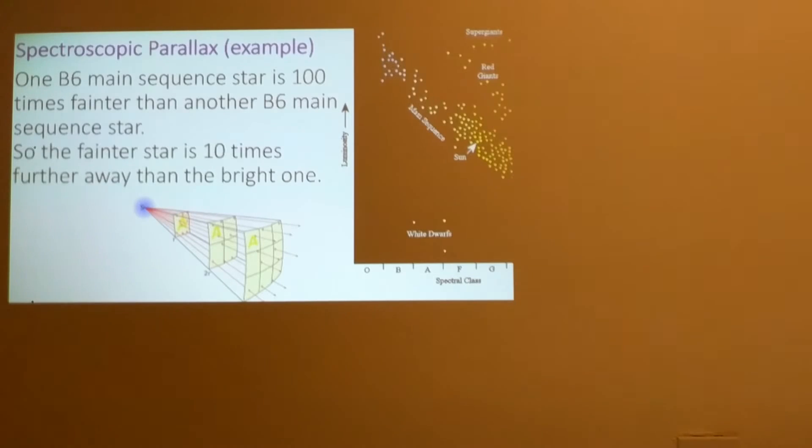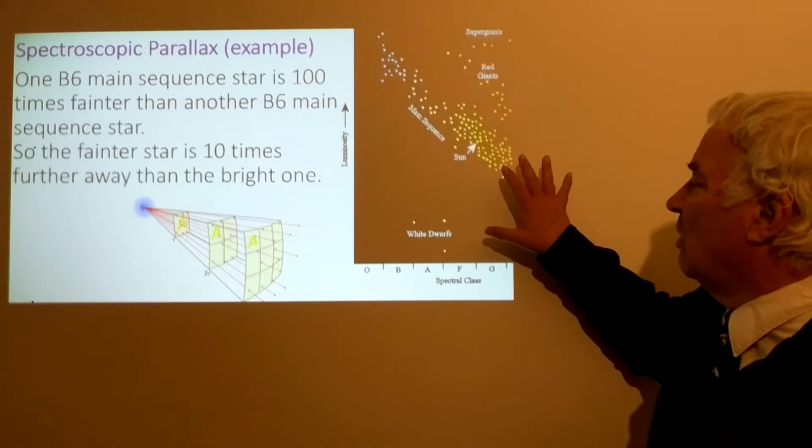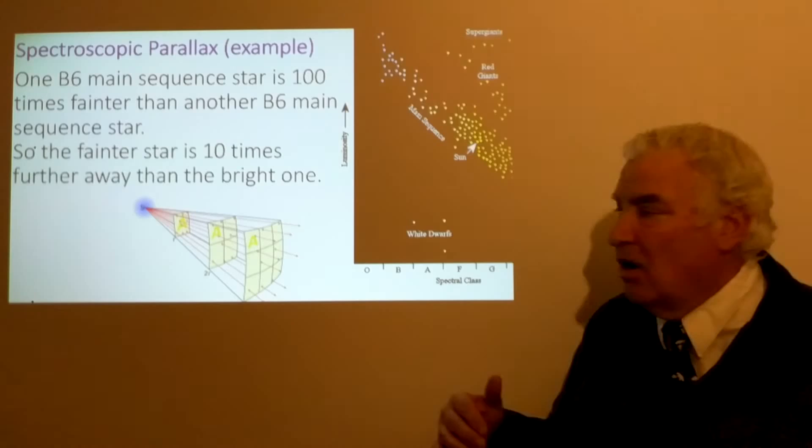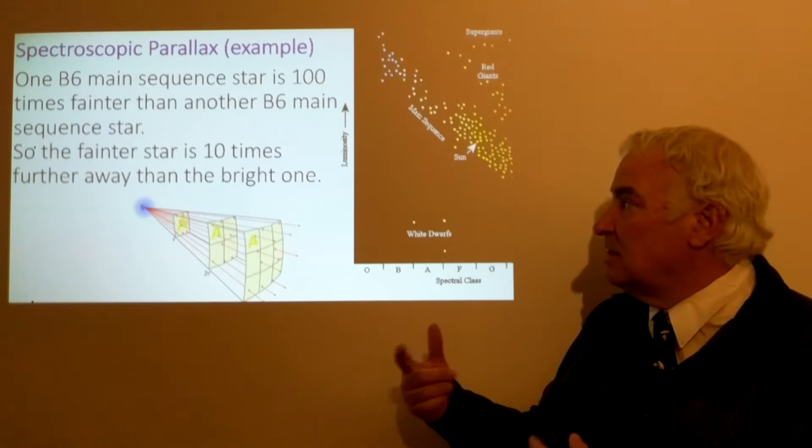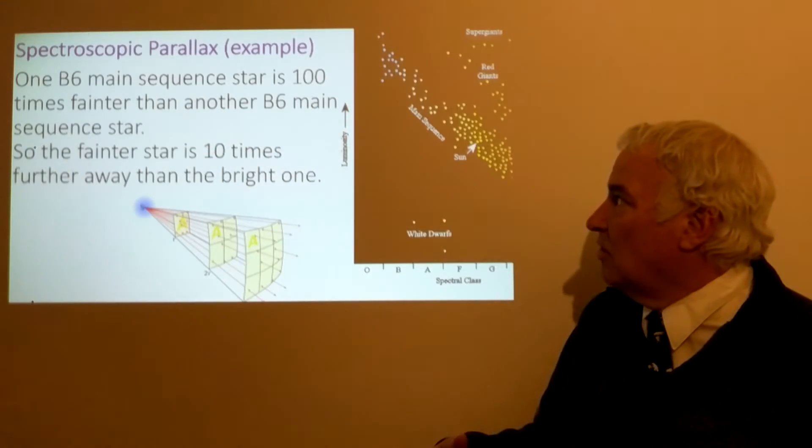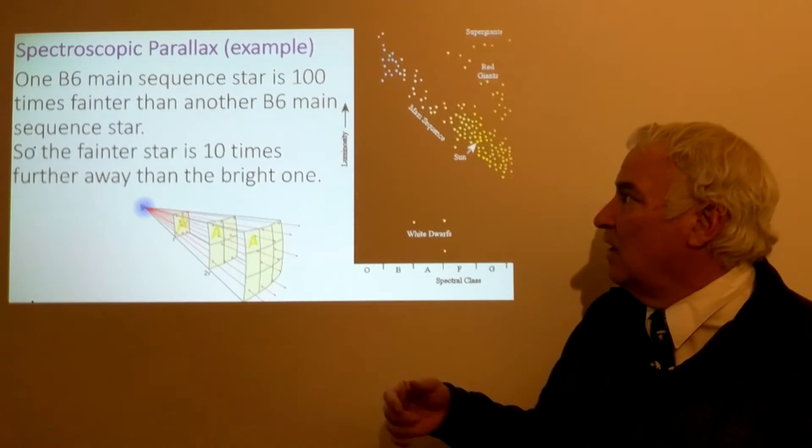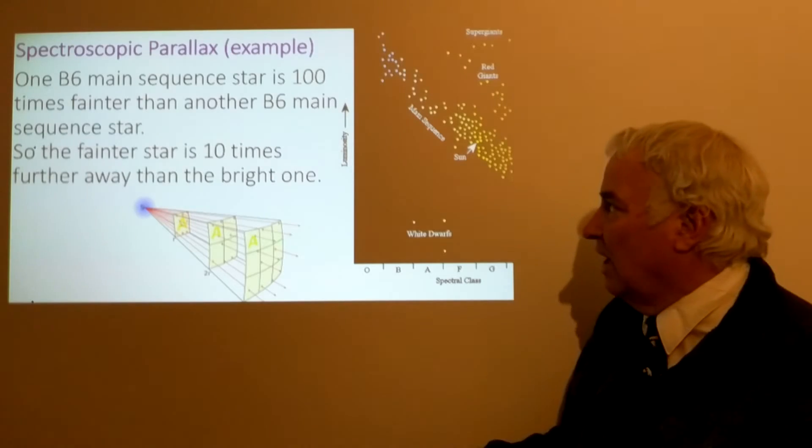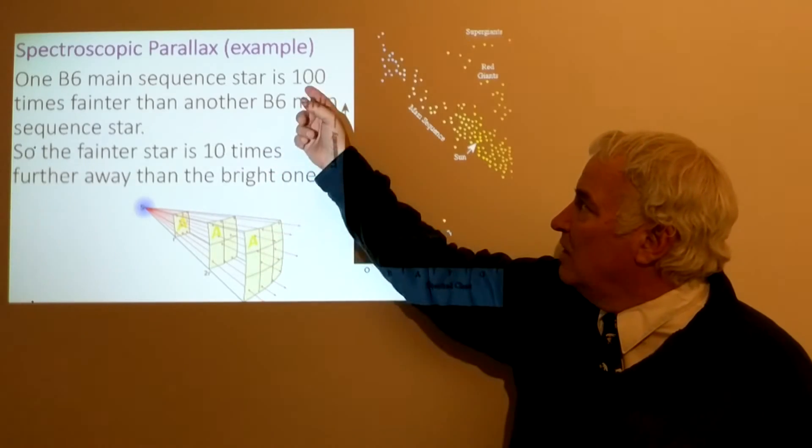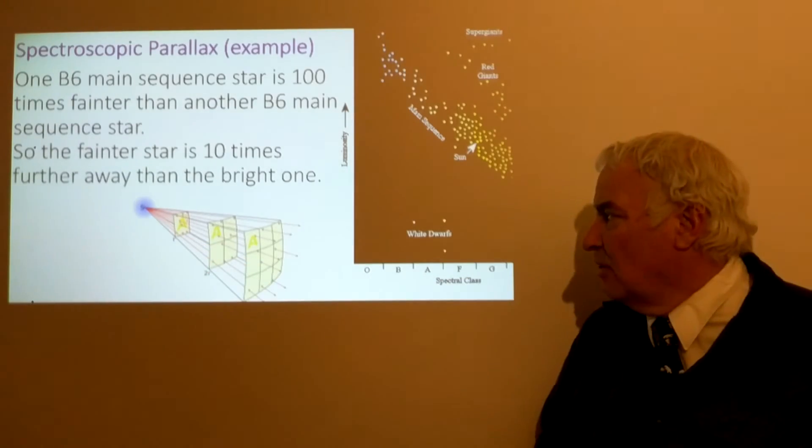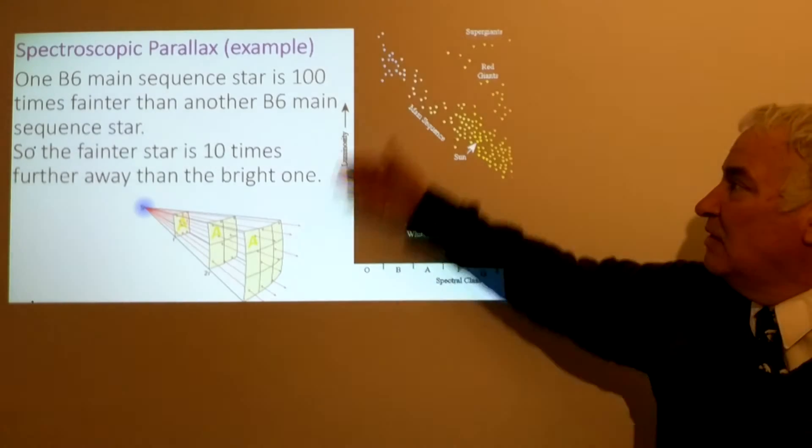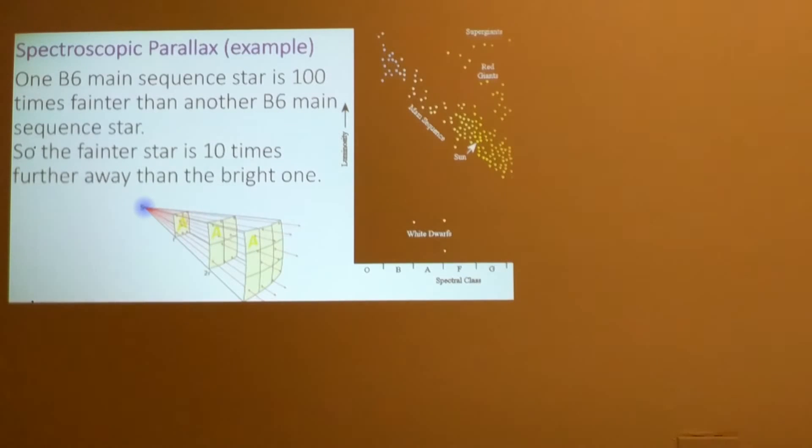Spectroscopic parallax, well that's another method. We can use the position on the HR diagram and the brightness of the star to compare two stars that are virtually identical. If both are B6 main sequence stars but one is 100 times fainter than another, since it's 100 times fainter it's going to be 10 times further away. This is from the inverse square law that the brightness drops as the square of the distance away. By doing this comparison, this is called spectroscopic parallax. We would have to know the distance to the closer one by stellar parallax, but this is a way we can extend out even to further distances.